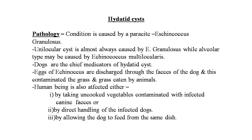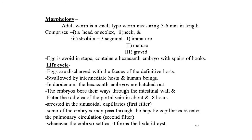Dogs are the chief mediator of hydatid cysts. Eggs of Echinococcus are discharged through the feces of the dog and contaminate the grass, which is then eaten by animals. Human beings are also affected either by taking uncooked vegetables contaminated with infected canine feces or by direct handling of infected dogs, or by allowing the dog to feed from the same dish.